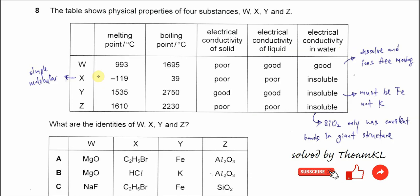So let's start with W. The melting point is quite high, boiling point is quite high, electrical conductivity of solid is poor, liquid is good. So from here we know that this one is ionic compound. Because the ions are not freely moved in solid, but in liquid, ions are freely moved and it can carry the charge.